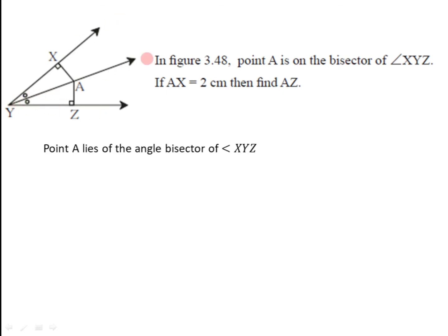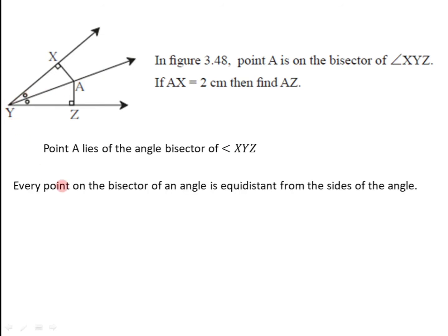It is given that point A is on the angle bisector of angle XYZ. That means ray YA is the angle bisector of angle XYZ and point A lies on it. Now we have the angle bisector theorem: every point on the bisector of an angle is equidistant from the sides of the angle. So for angle XYZ, XY and YZ are the two sides.